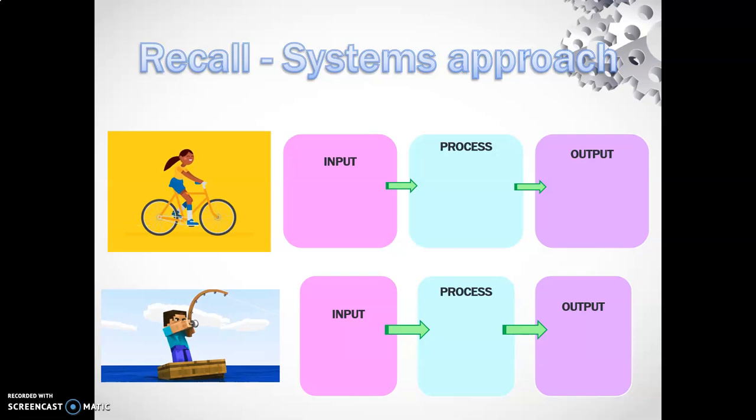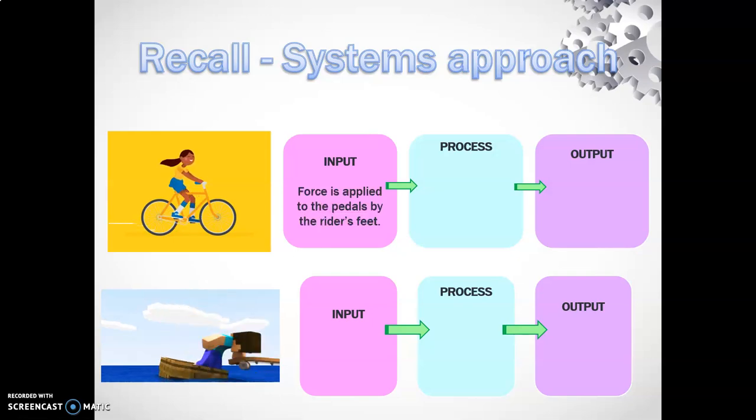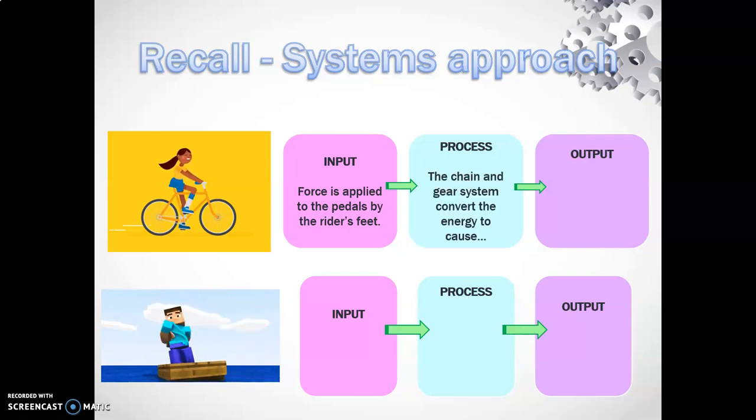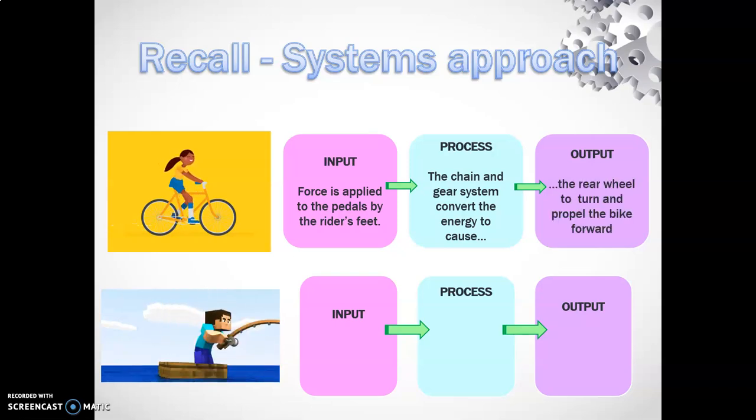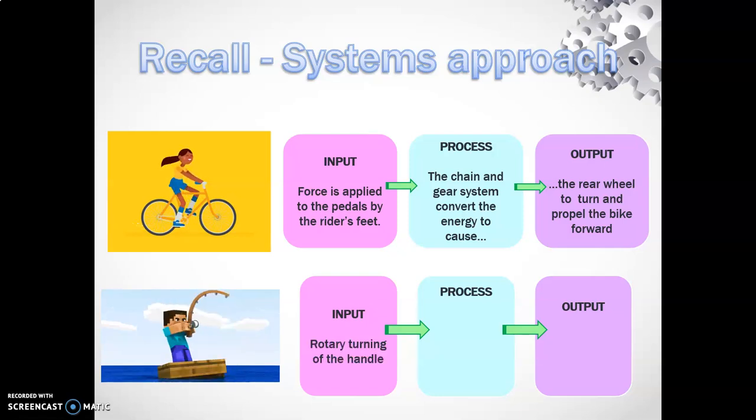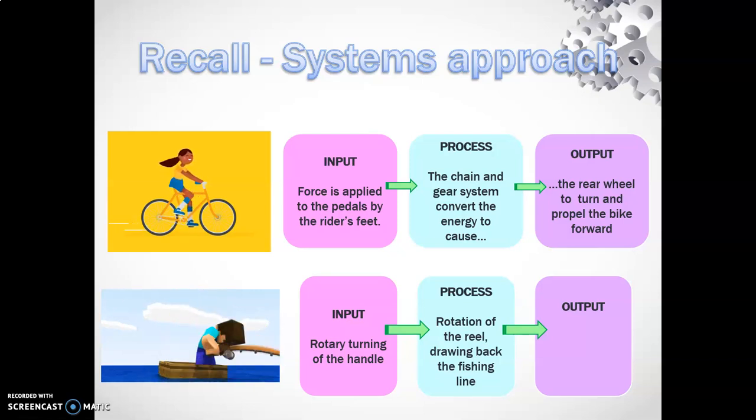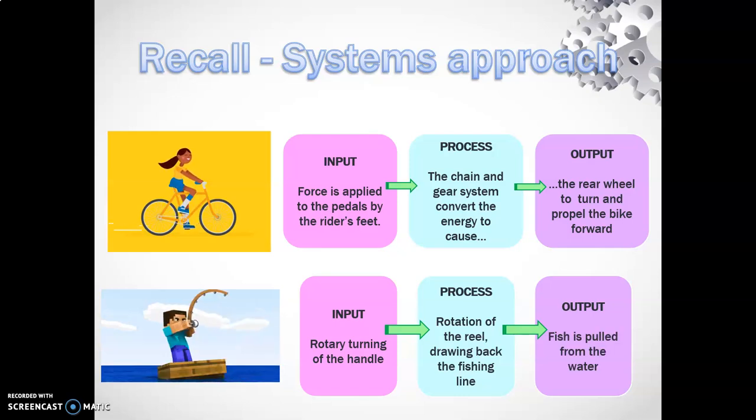We also looked at mechanical systems using a systems approach. In a bicycle, force is applied to the pedal as input. The process is the gear system involved, and the output is the rear wheel moving to propel the bike. With fishing, turning the handle in rotary motion is the input. The process is the reel rotating which draws back the line, and the output is drawing the fish out of the water.